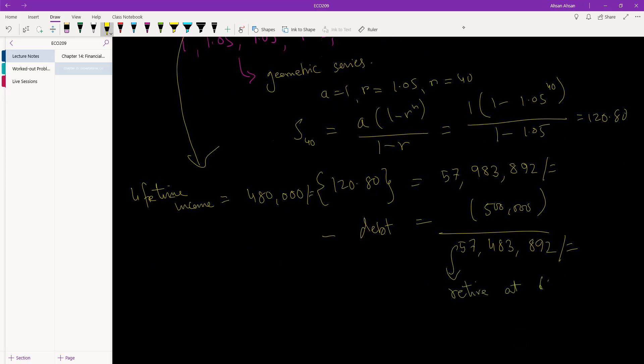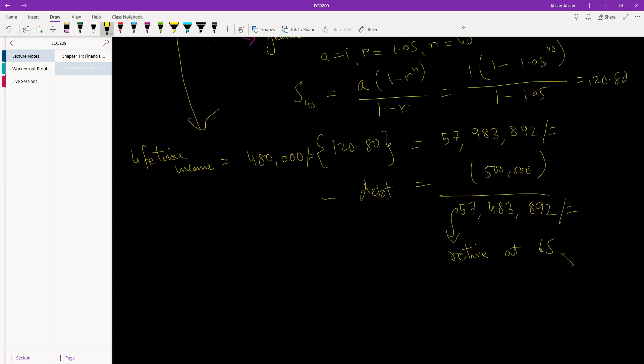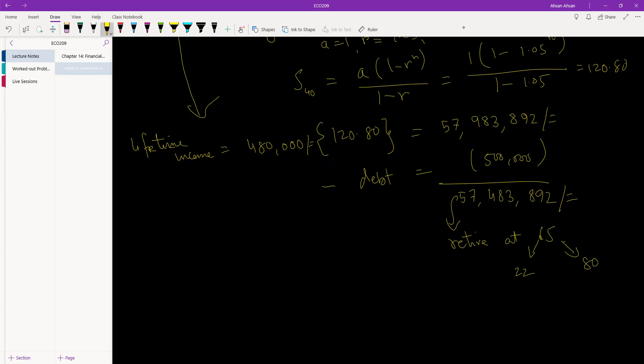So you will have earned this much money when you retire at 65. Retire at 65, okay. You expect that you will live until you are 80 years old. Right now, you are 22 years old. So how much of your life do you have left? You will live for another 80 minus 22, 58 years. So the question,